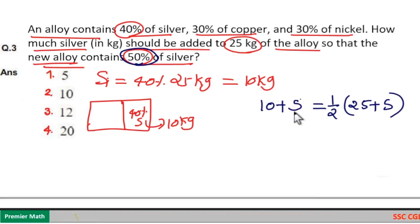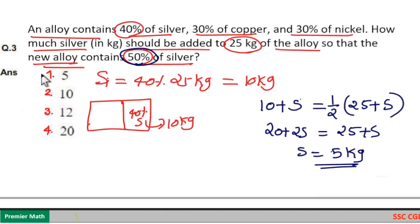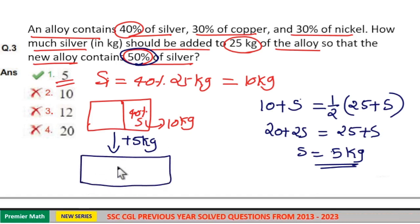Setting up the equation: 20 + 2s = 25 + s, which means s = 5 kg. Option one is your answer. That is, when I add 5 kg silver to this initial alloy, the new alloy will contain 50% silver.